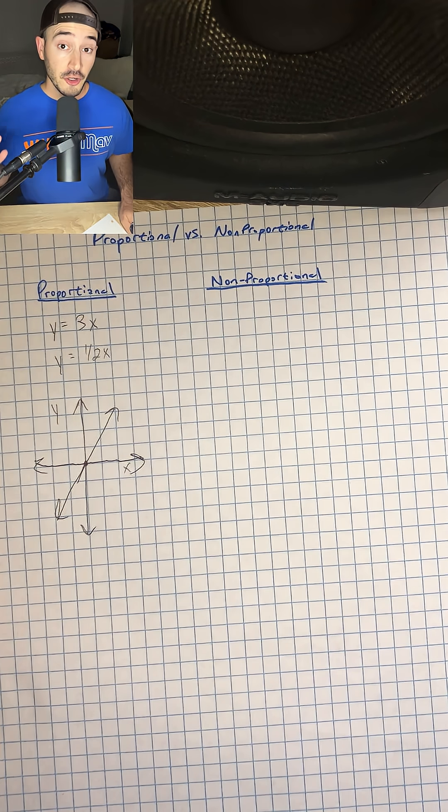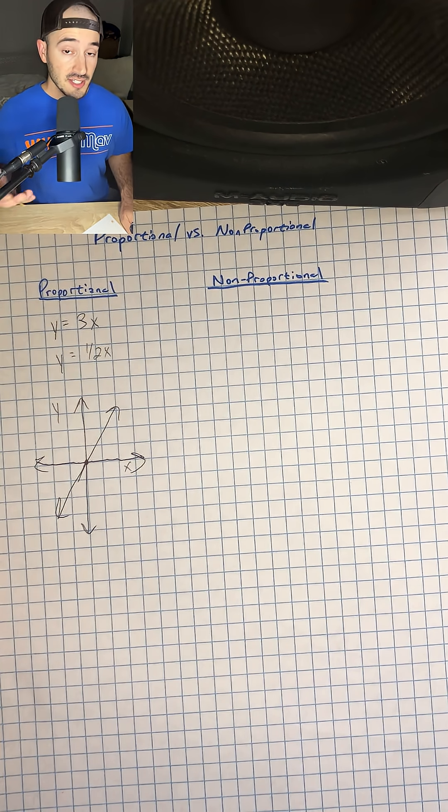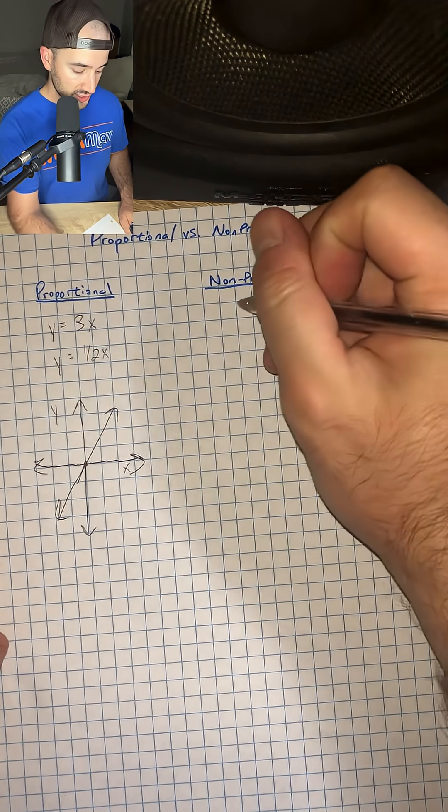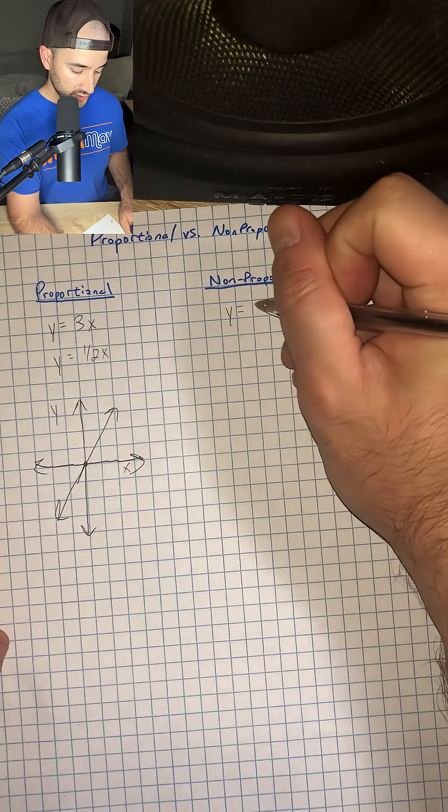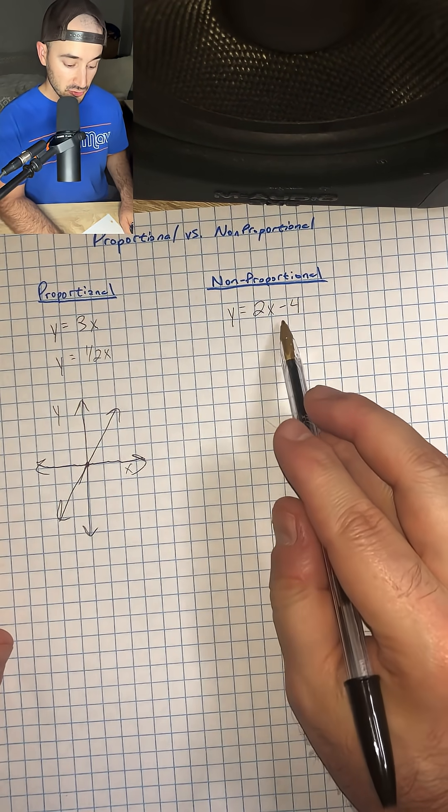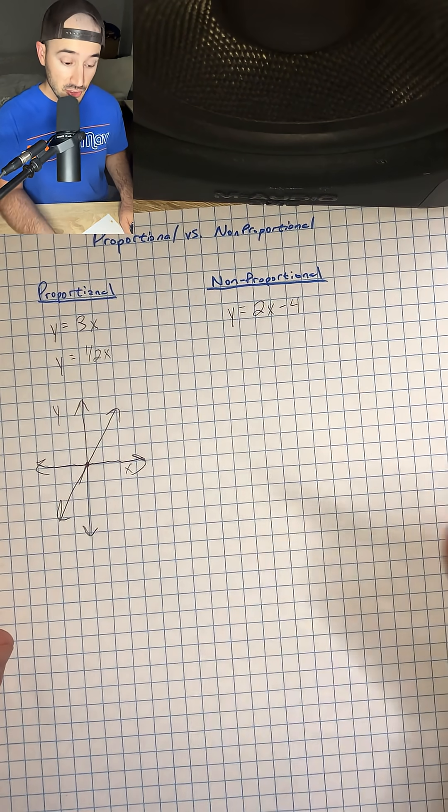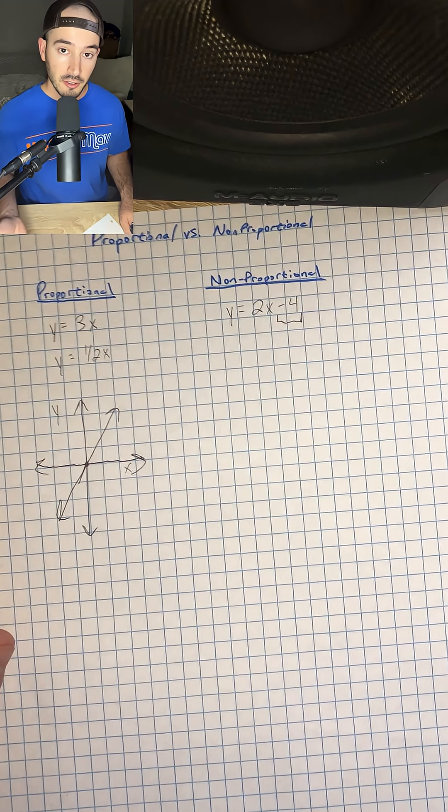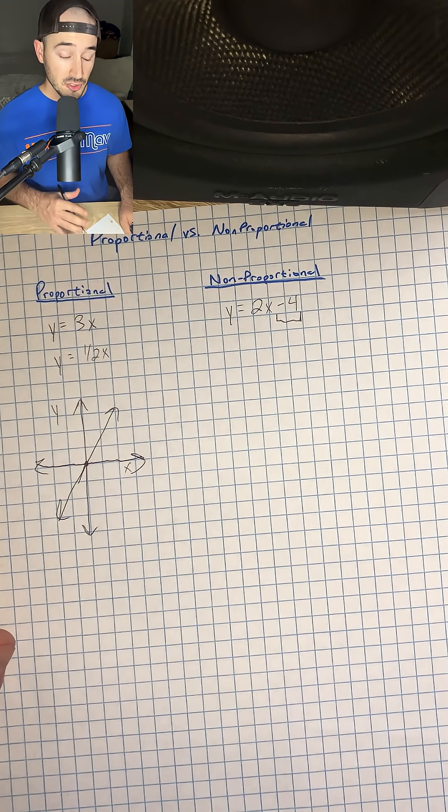Now for non-proportional, it's going to be just the opposite. An example of a non-proportional equation would be y equals 2x minus 4. The reason it's non-proportional is because it's not going through the origin now because we have a y-intercept of negative 4.